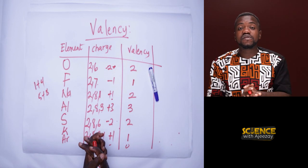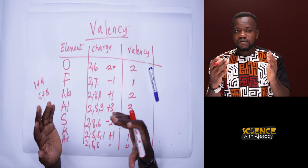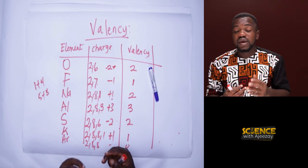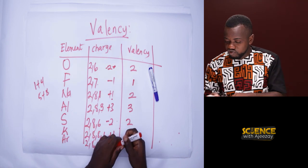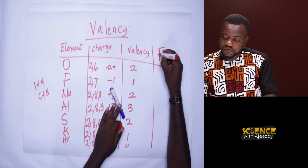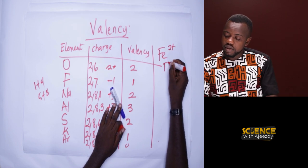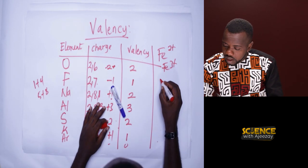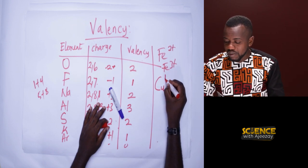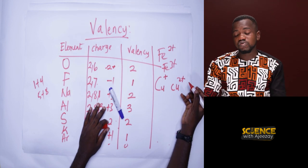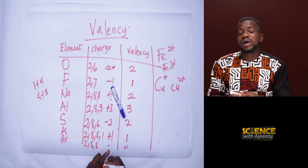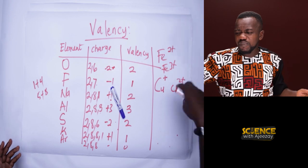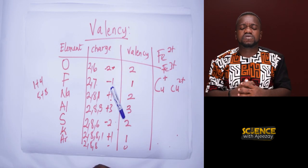There are some elements that have two or more possible charges. For example, iron (Fe, ferrum) can form iron(II) — that is Fe 2+ — or iron(III) — that is Fe 3+, depending on the element it is reacting with. Copper can also form copper(I) or copper(II) plus. Lead (Pb) is also among these elements. As we go on, we will cover more of these elements so that when you are forming a compound, you know which ion is reacting with which.